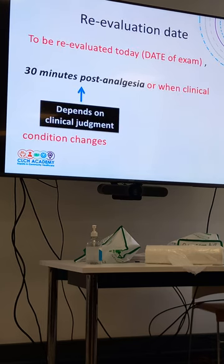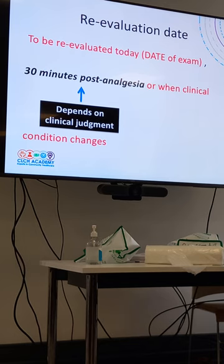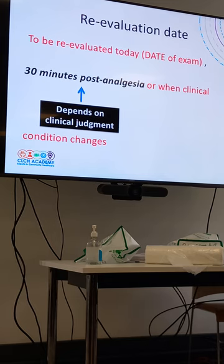The re-evaluation date is mandatory — you need to write 'today' and then in parentheses the actual date of the exam. So whatever your date of exam is, practice writing it down. Write 'to be re-evaluated today' and then the actual date — not a generic date, but the real one: December 2, December 6, December 25. For pain, it's always 30 minutes post analgesia, or when clinical condition changes. The ones written in red are there by default; the one in black can change — so you can write every 4 hours, every 12 hours, or every shift.